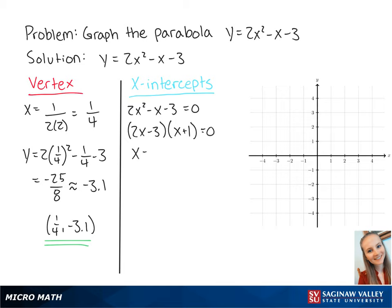This gets us x equals 1.5 or x equals negative 1. Now we want to find the y-intercept, which is when x is equal to 0. So we set up the equation y equals 2 times 0 squared minus 0 minus 3, which gets us y is equal to negative 3.